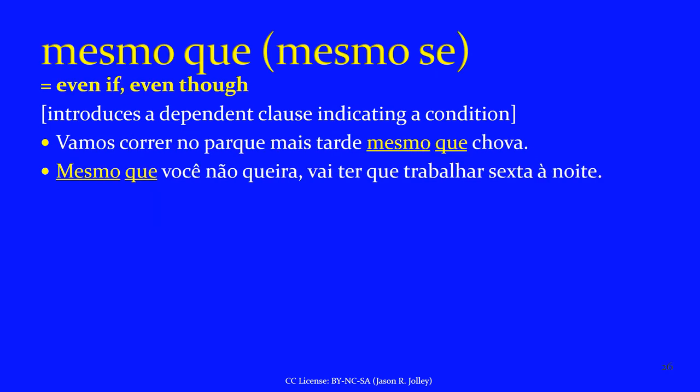MESMO QUE or MESMO SE is a subordinating conjunction meaning 'even if' or 'even though.' It introduces a dependent clause indicating a condition and also triggers the subjunctive. 'Vamos correr no parque mais tarde, mesmo que chova' — even if it rains, we're going to run in the park. Inverted: 'Mesmo que chova, vamos correr no parque mais tarde.' 'Mesmo que você não queira, vai ter que trabalhar sexta à noite' — even if you don't want to, you're going to have to work Friday night. Inverted: 'Vai ter que trabalhar sexta à noite, mesmo que não queira.' Even if, or even though: MESMO QUE.